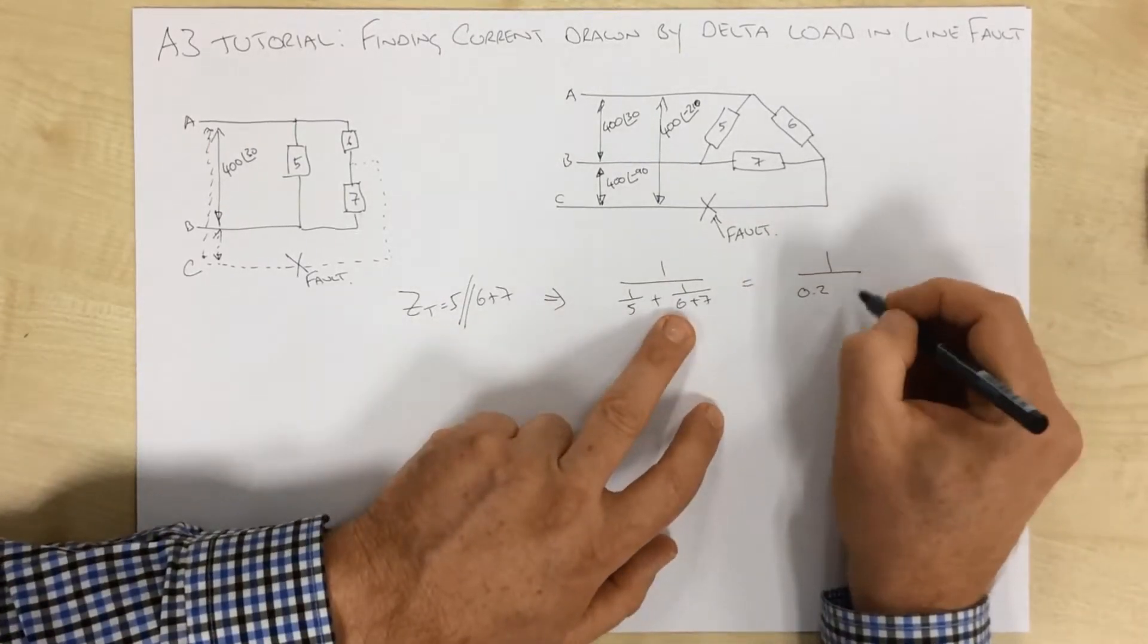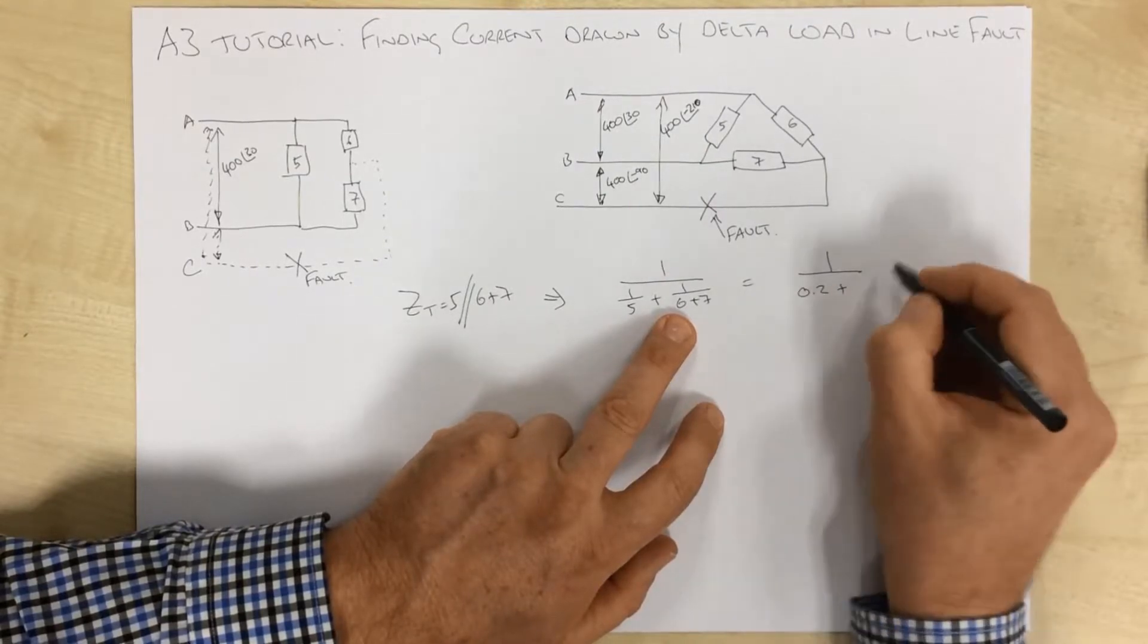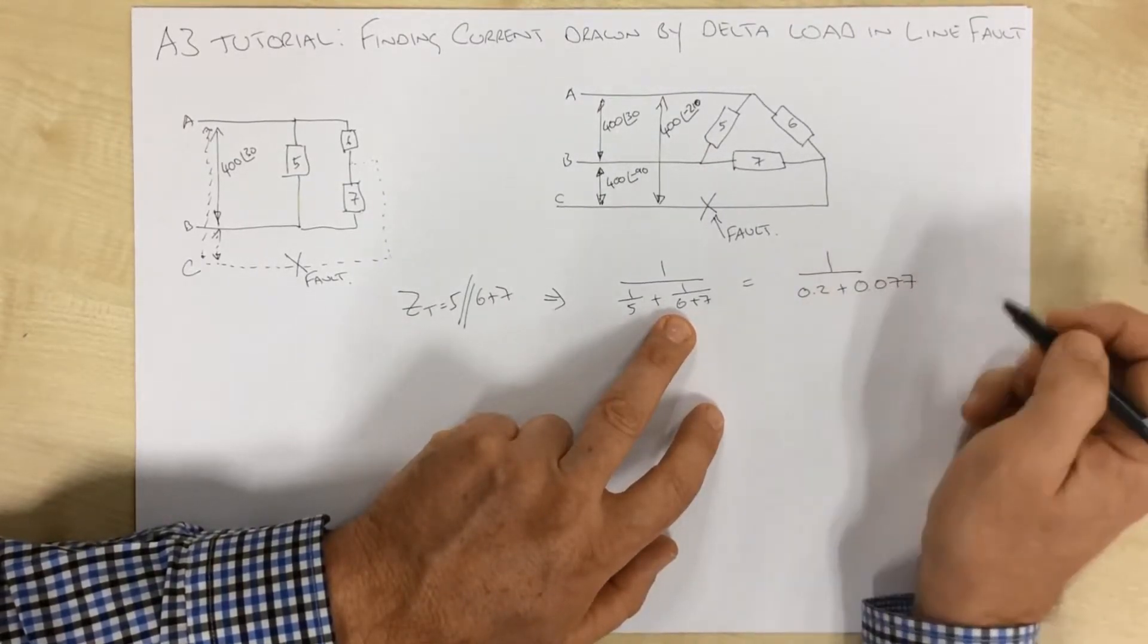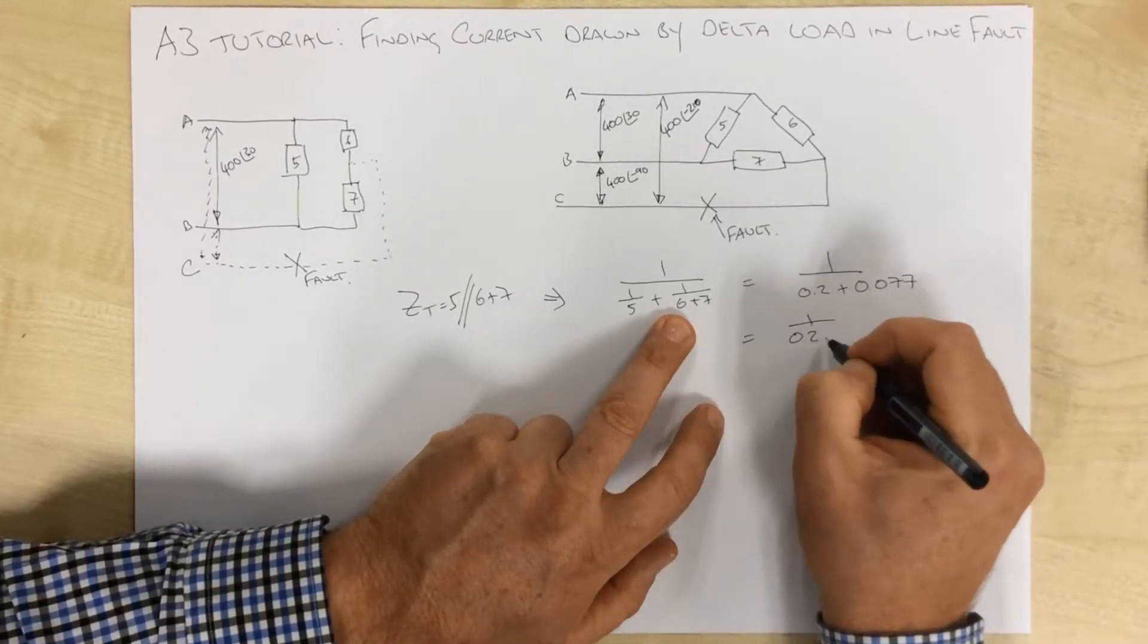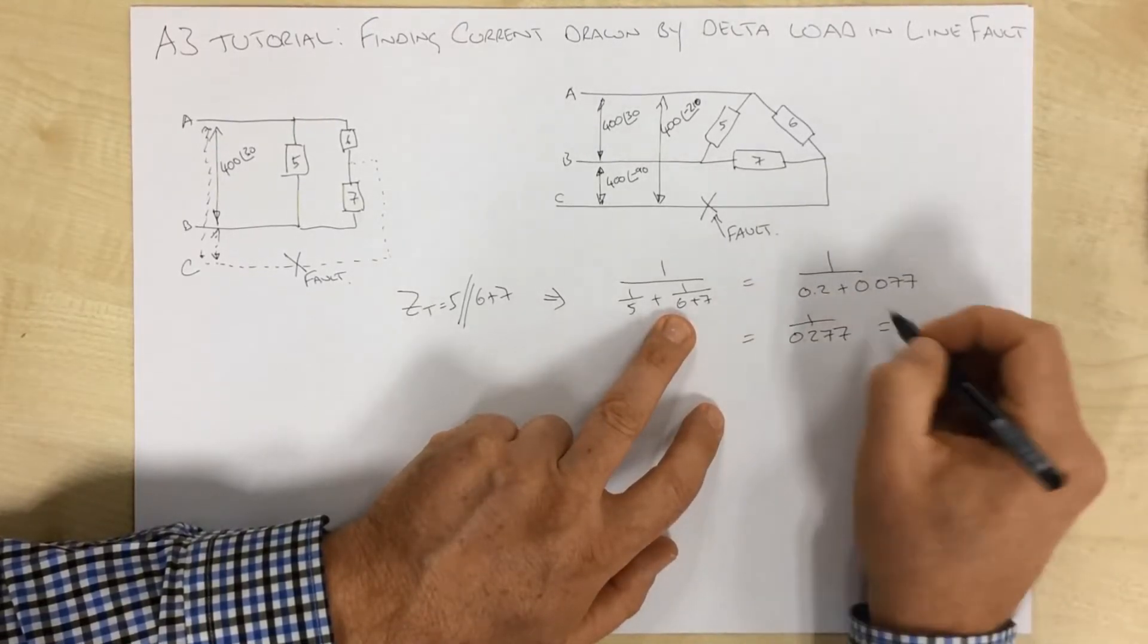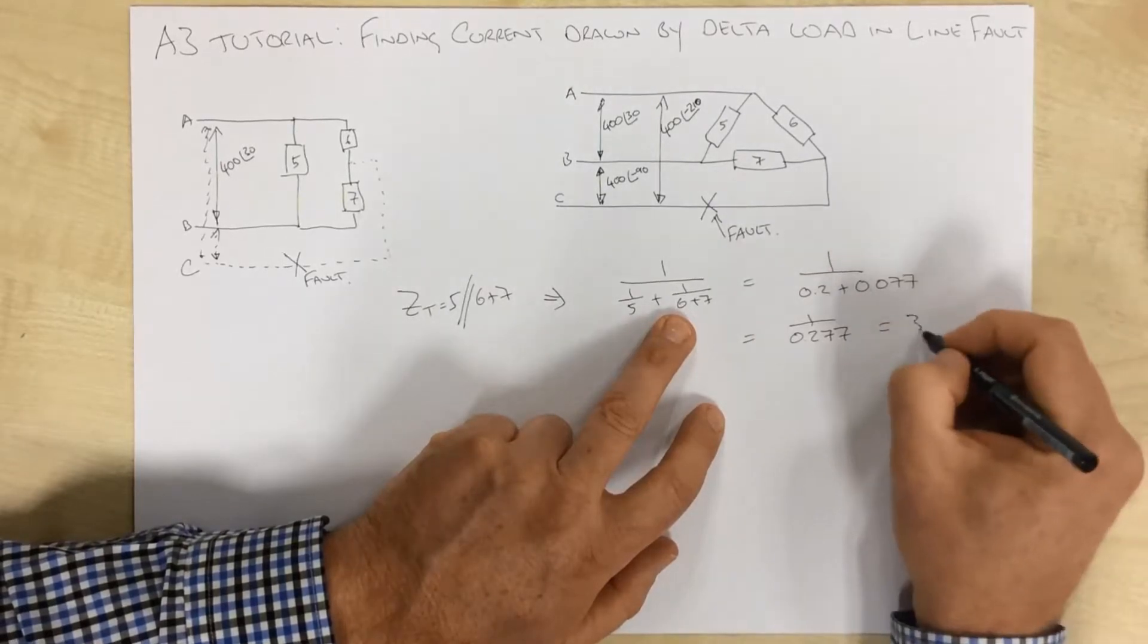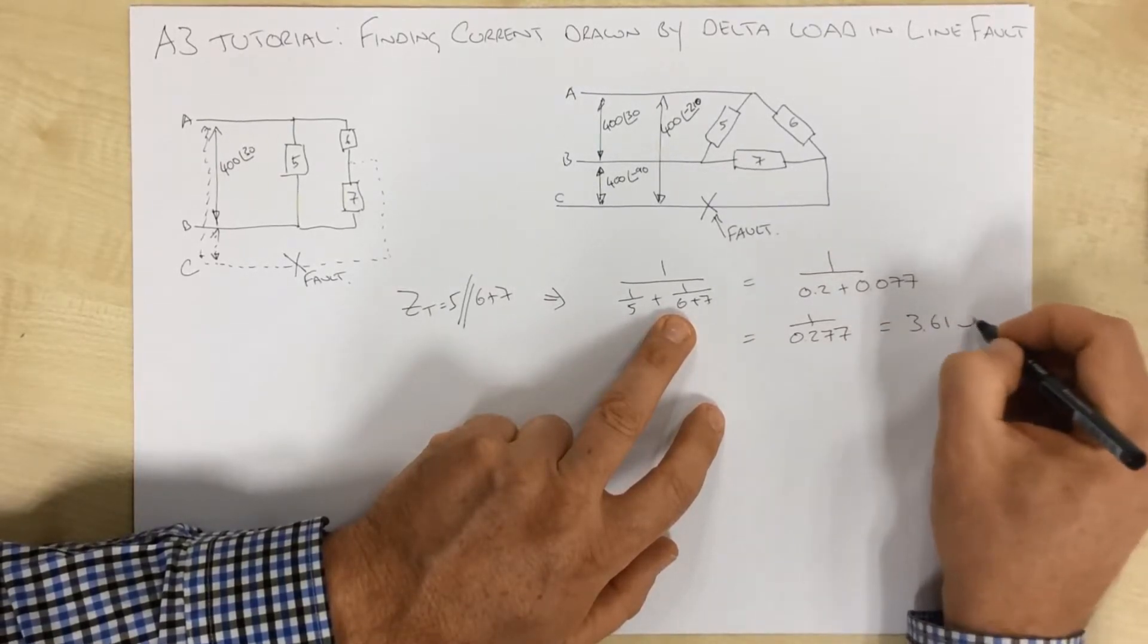1 over 13 is 0.077, which is 1 over 0.277. You solve that there and you have 3.61 ohms.